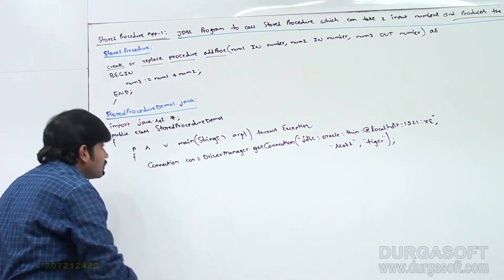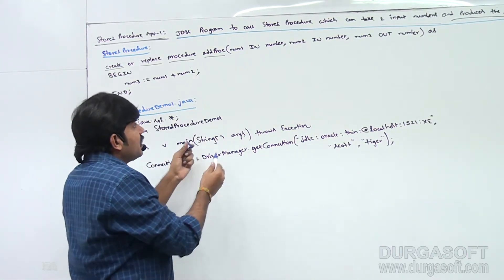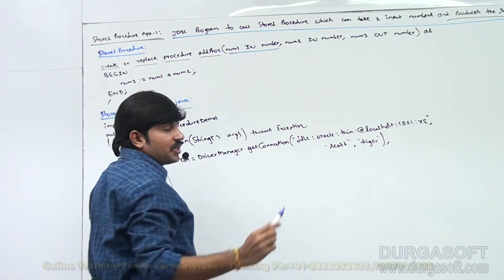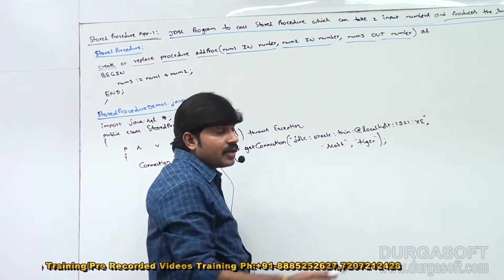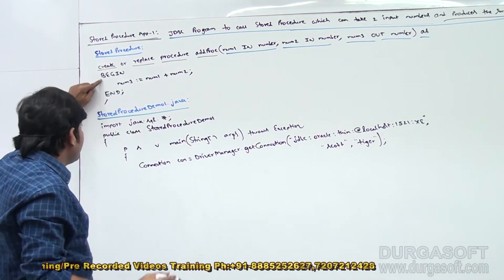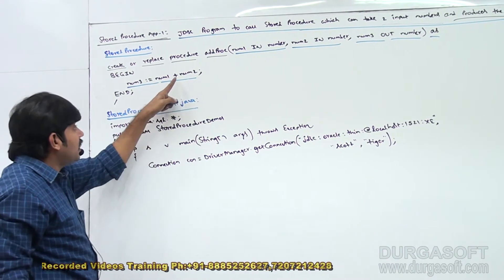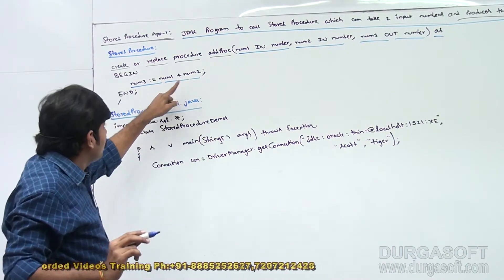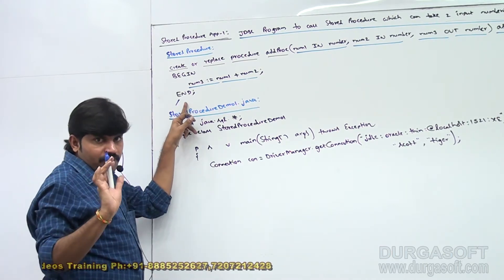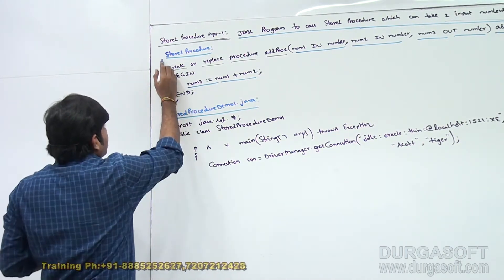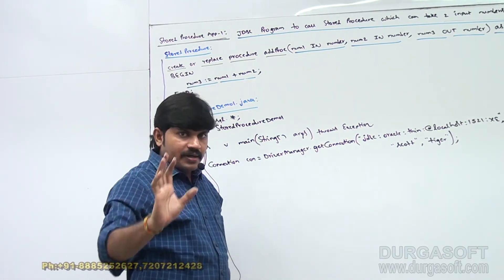Now observe: CREATE OR REPLACE PROCEDURE yard_proc — that is the procedure name. Next, num1 is the first IN parameter, num2 is the second IN parameter, num3 is the OUT parameter. BEGIN: num3 := num1 + num2. Then use the slash symbol to compile. Make sure this stored procedure is ready in your database.